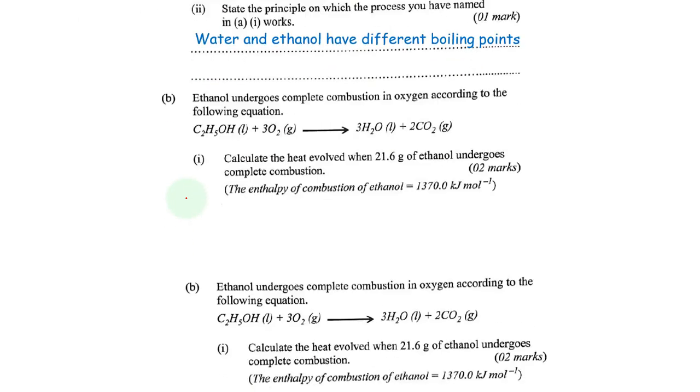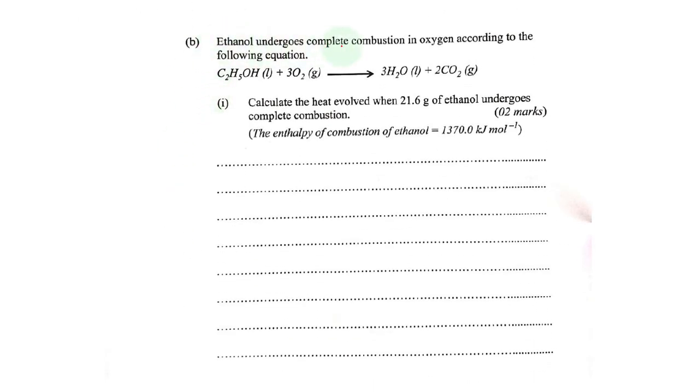Part B. Ethanol undergoes complete combustion in oxygen according to the following equation. So during complete combustion, we tend to produce carbon dioxide gas and water. Calculate the heat evolved when 21.6 grams of ethanol undergoes complete combustion. So 21.6 grams was burnt in excess oxygen. However, we have been told that the enthalpy of combustion of ethanol is this. Enthalpy of combustion of ethanol means one mole of ethanol was actually burnt in oxygen.